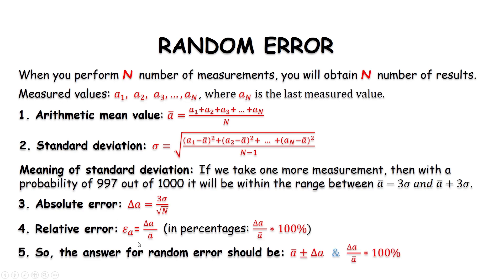So, the final answer for the random error should be written as a_min plus minus absolute error and relative error. That's basically how to calculate the random error.